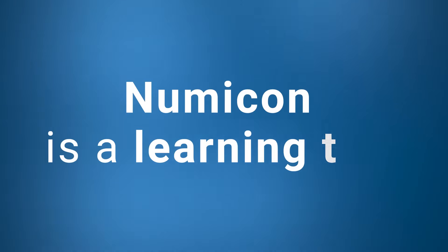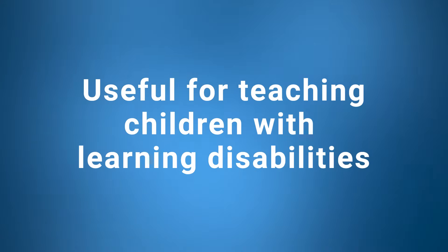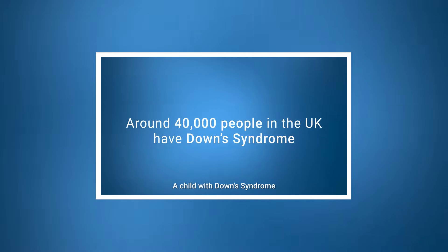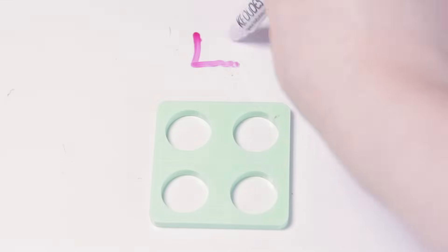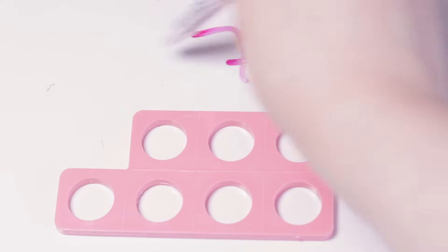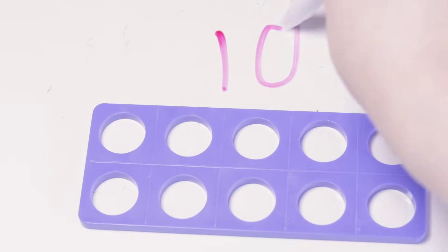Numicon is a learning tool that can be used to support maths learning. It's used across early years, Key Stage 1 and Key Stage 2, and it can be particularly useful when teaching children with learning disabilities. We talked a little bit about this in our video all about supporting children with Down syndrome, which you can find a link to in the corner or in the description. Each Numicon shape represents a different number from 1 to 10 and each one is a different shape and color. This helps children to differentiate between different values at a glance.